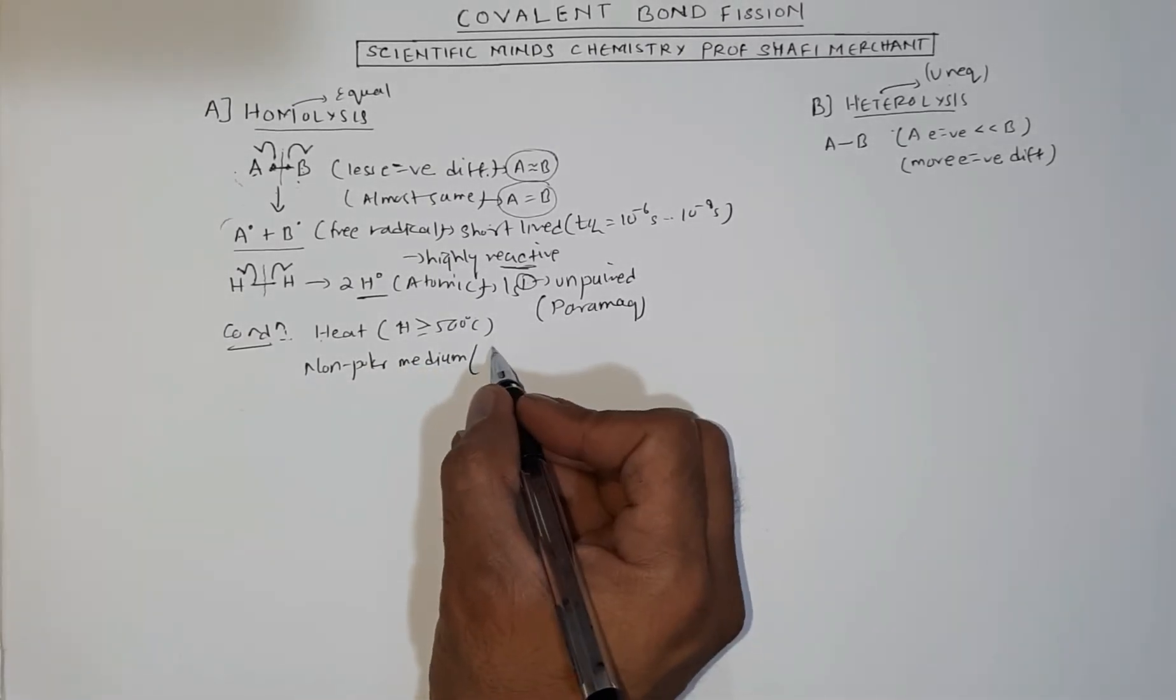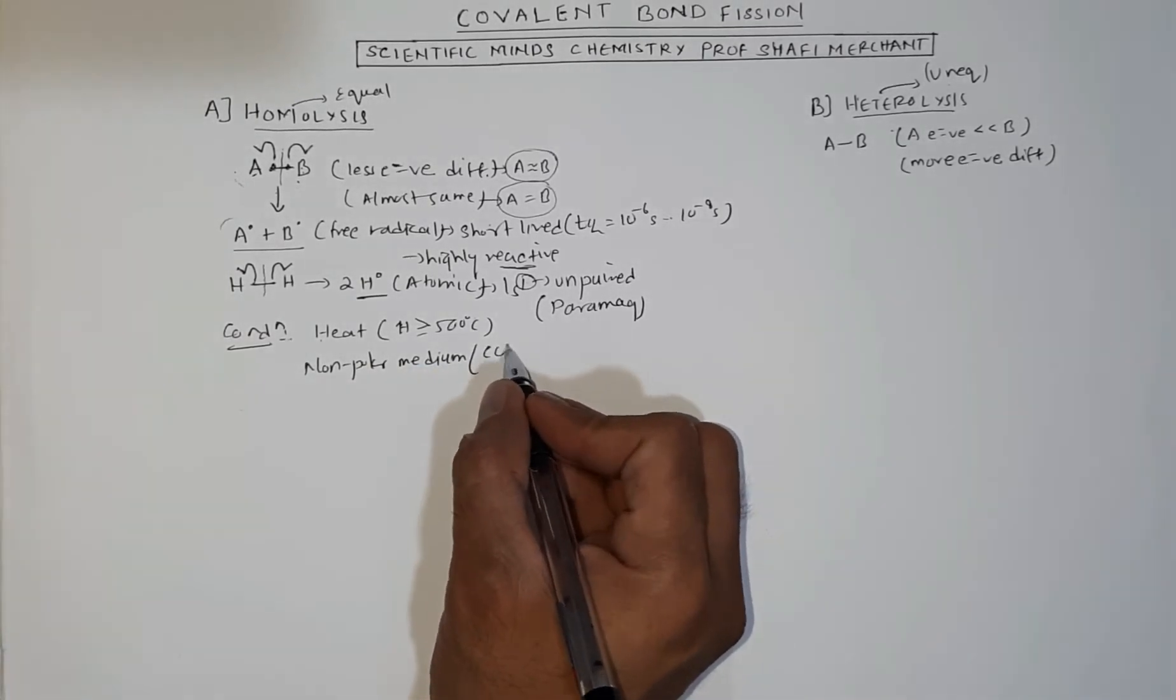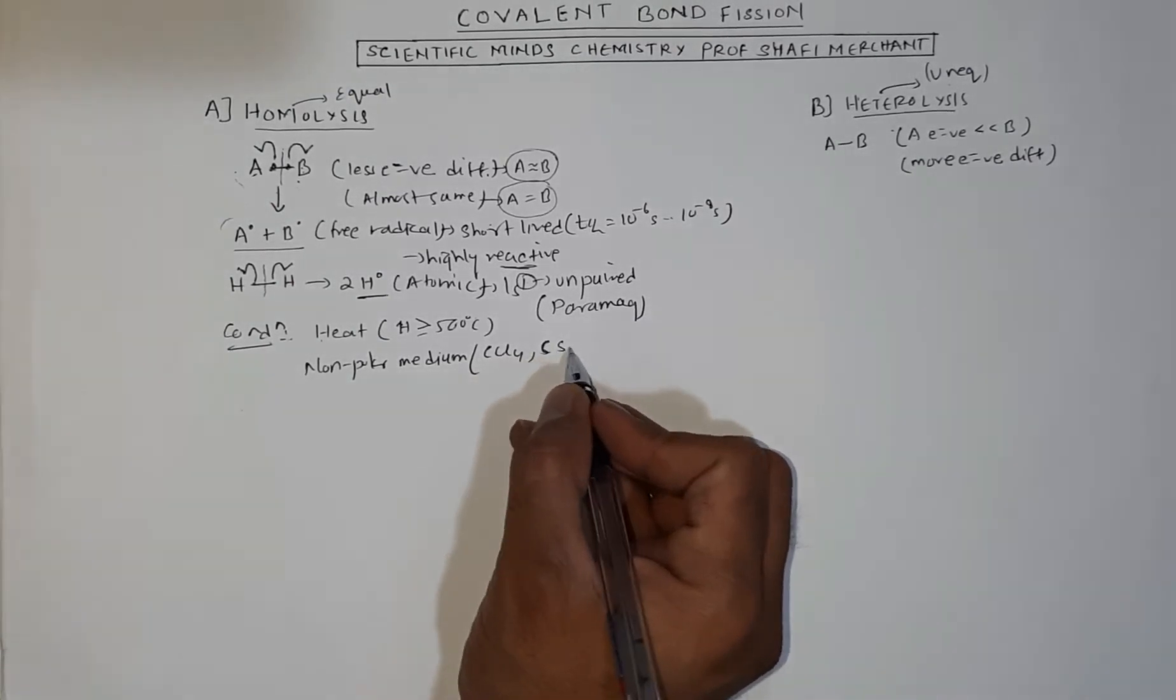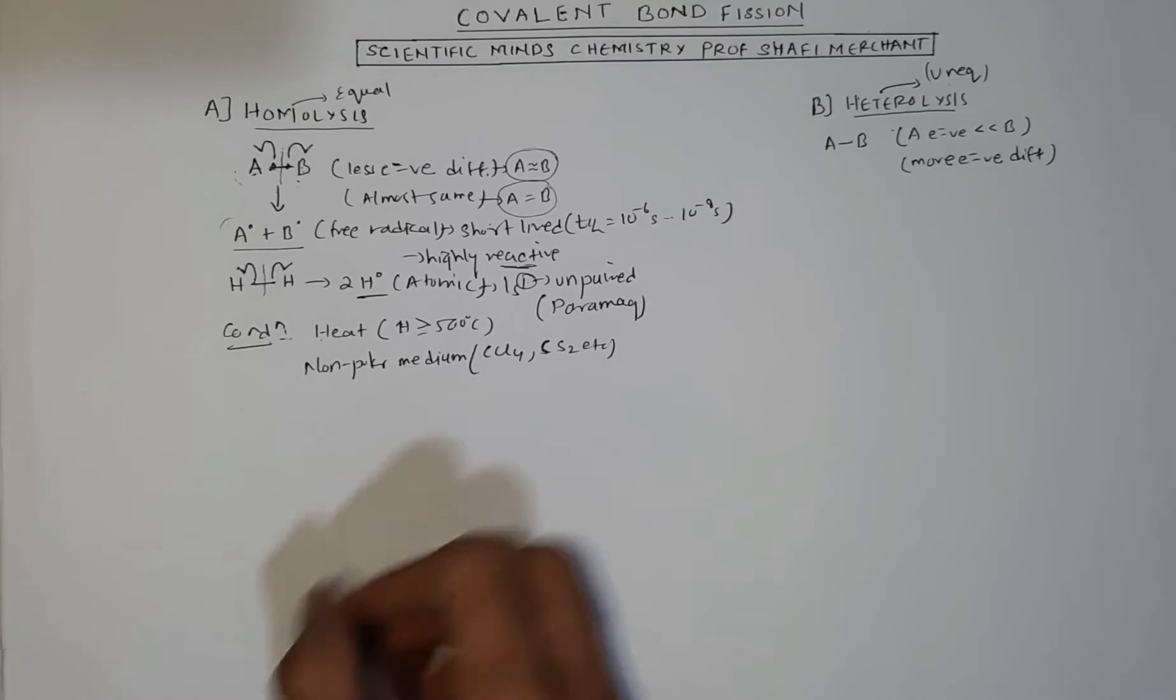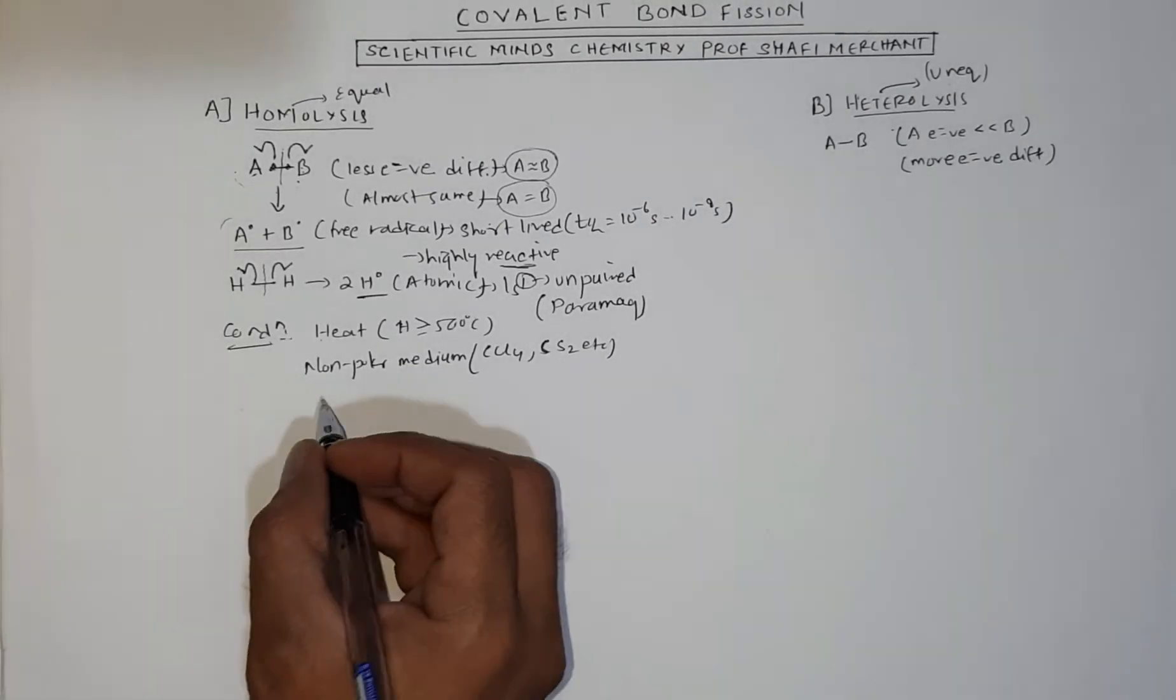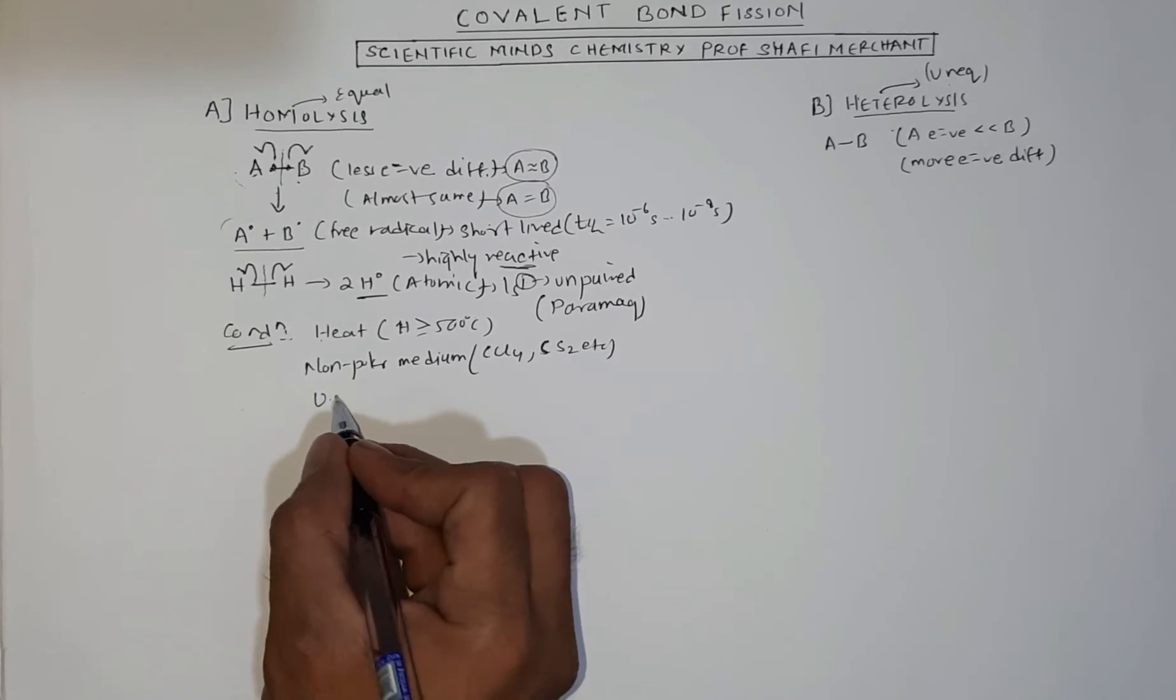For homolysis you require a non-polar medium. Like in reactions it will be written: presence of carbon tetrachloride, a non-polar solvent, carbon disulfide CS2, etc. Non-polar media, there should be no polarity in the medium.